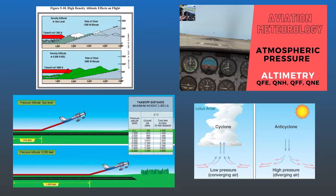Next come questions on pressure, density, and the various altimeter subscale settings. You can be asked about the pressure lapse rate at 20,000 feet or 40,000 feet. You should know the pressure in hectopascals at various heights — for example, 700 hPa at 10,000 feet or 300 hPa at 30,000 feet. There will also be a lot of questions on QNH, QNE, QFE, etc., so please practice questions and numericals on these.